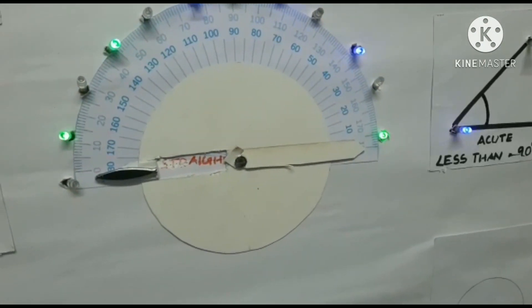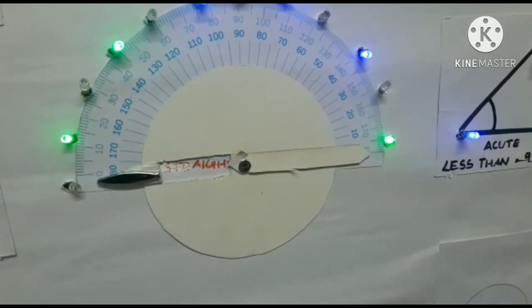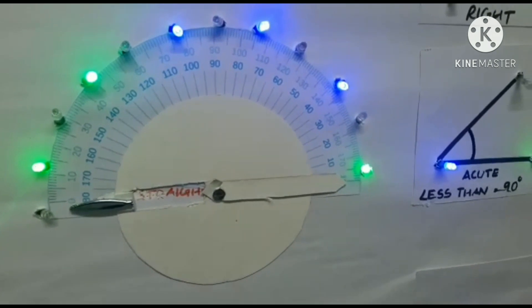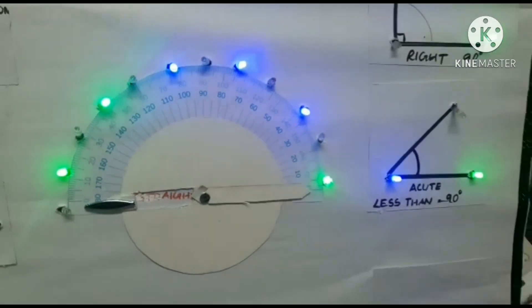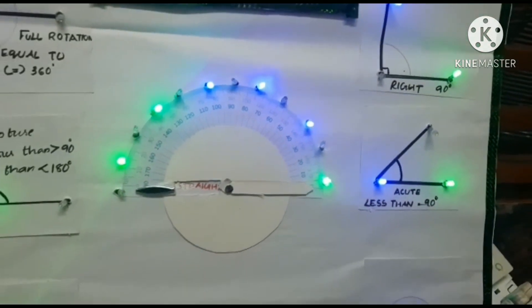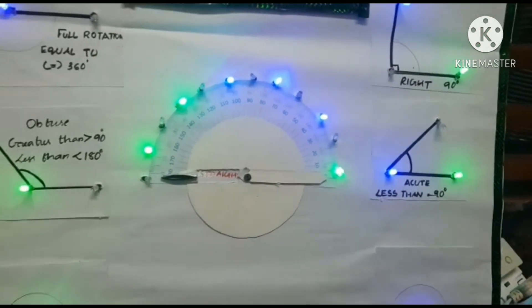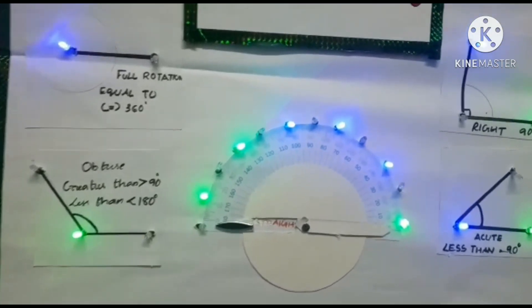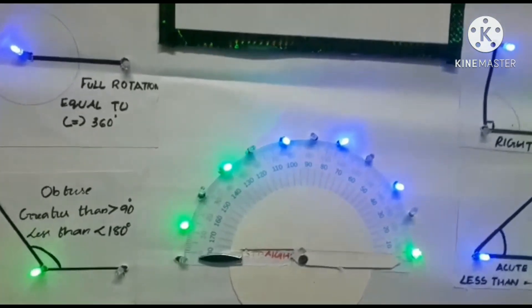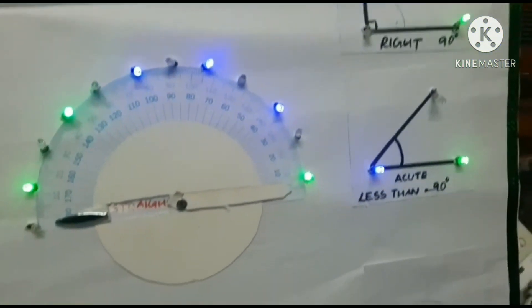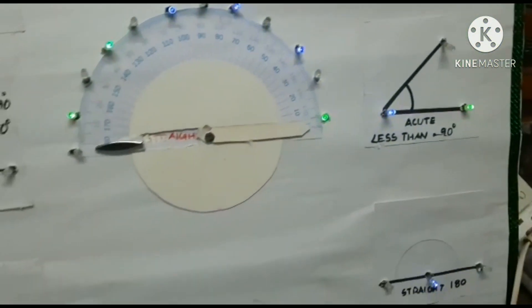Straight angle: a straight angle is an angle where the vertex point has a value of 180 degrees. Basically, it forms a straight line.